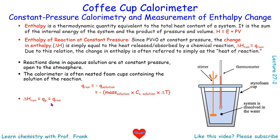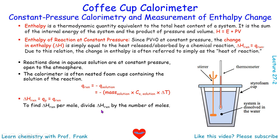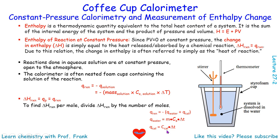Since the enthalpy change of reaction is at constant pressure, we use QP, and that is equivalent to QRxN, or the heat of reaction. To find the enthalpy change of reaction per mole, we simply divide the ΔH of reaction by the number of moles. The heat of the reaction can be calculated using the heat of water plus the heat of the calorimeter. The heat of water uses mass, specific heat capacity, and temperature change of water. The heat of the calorimeter uses its heat capacity — normally experimentally determined — multiplied by the temperature change. This is how the coffee cup calorimeter works.